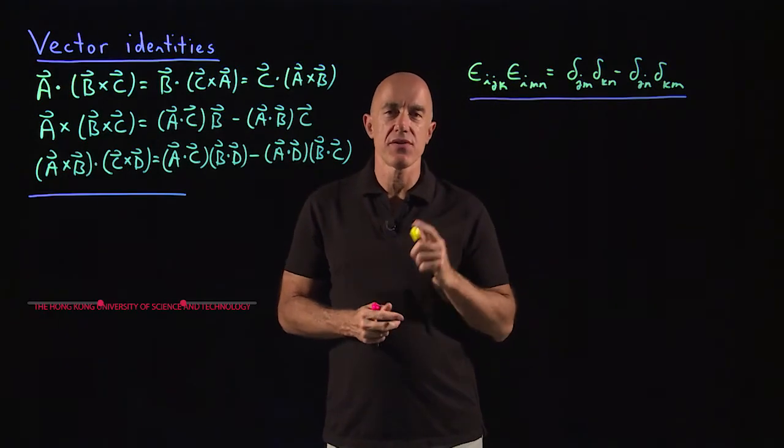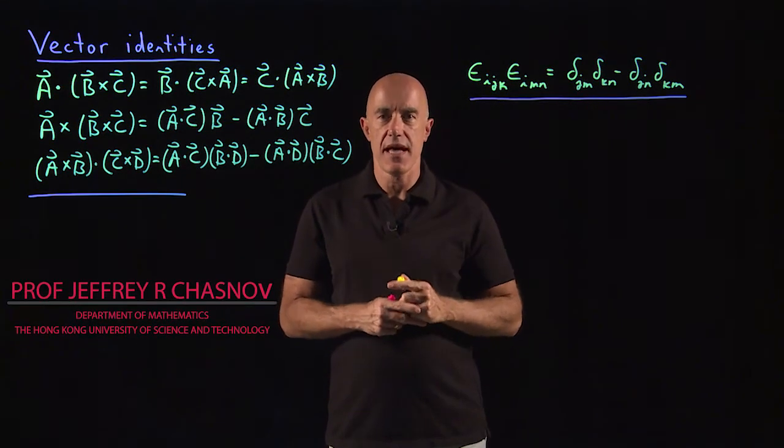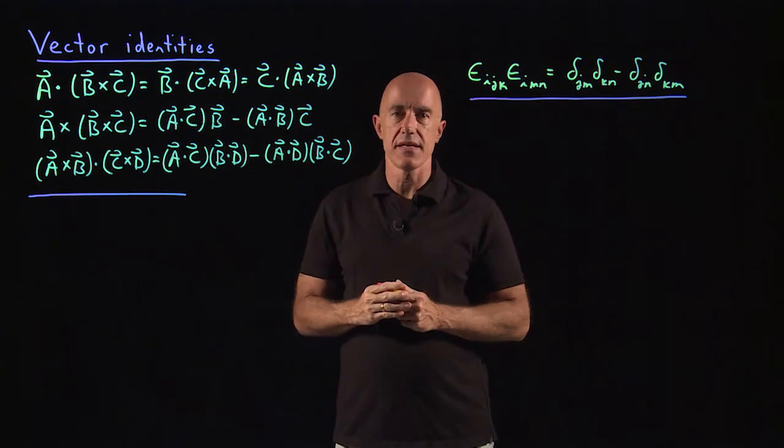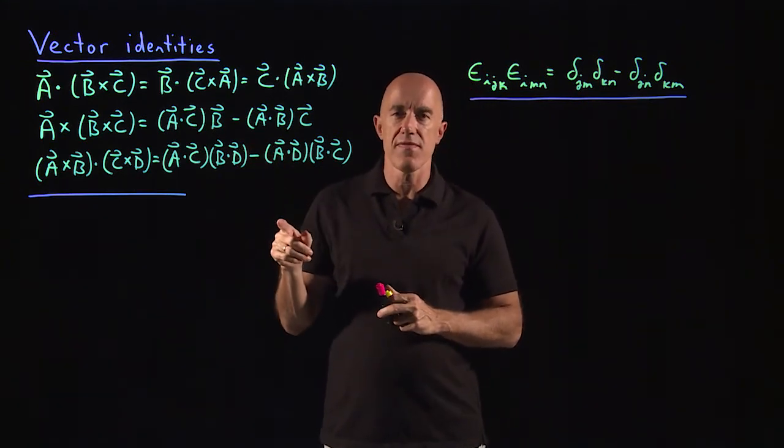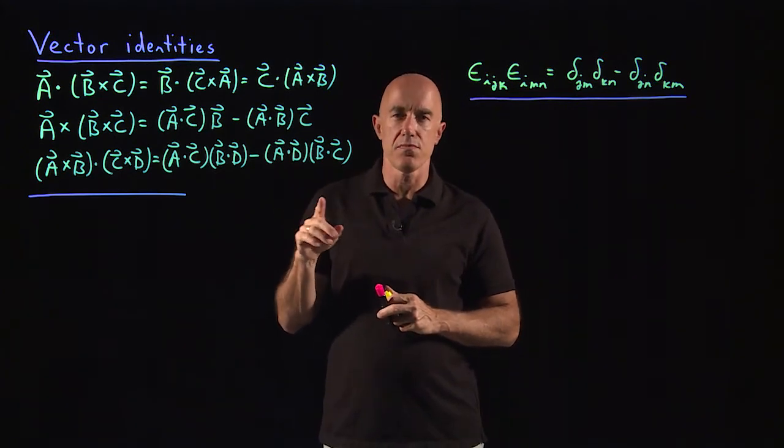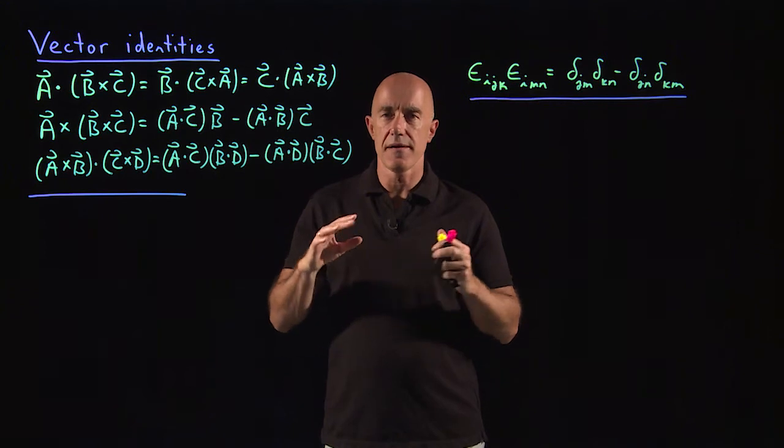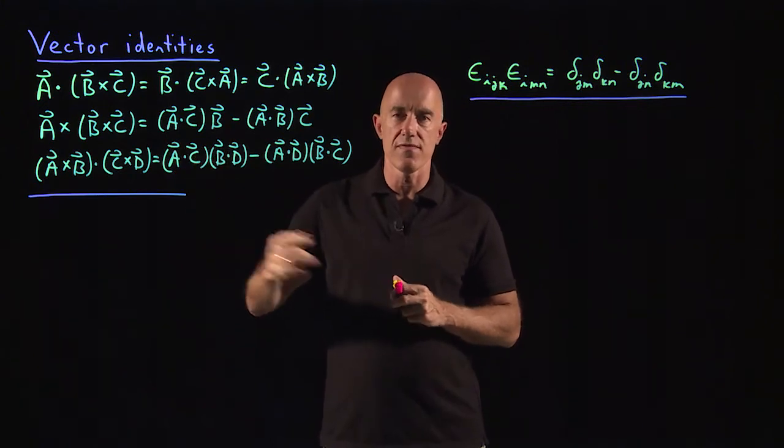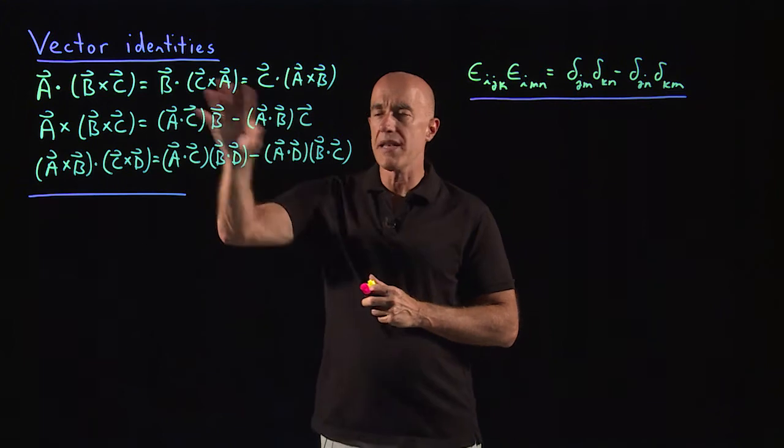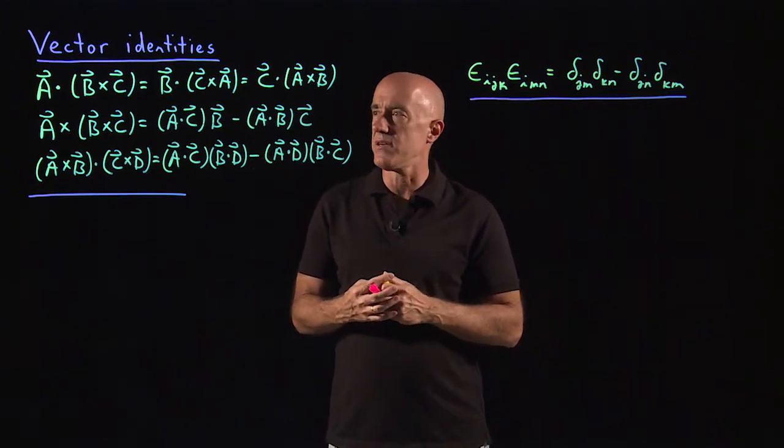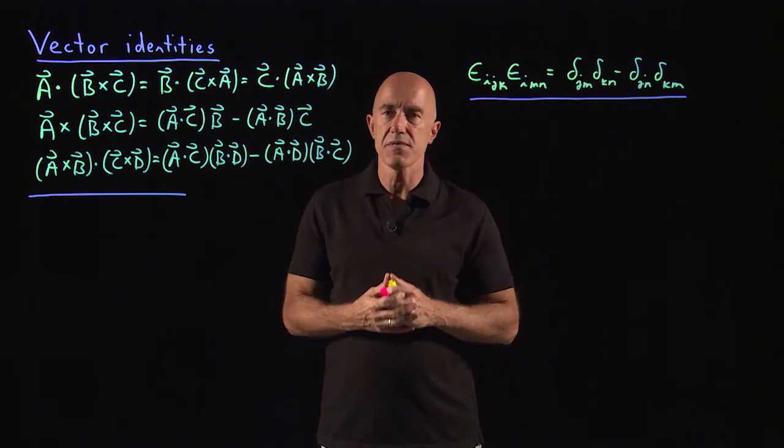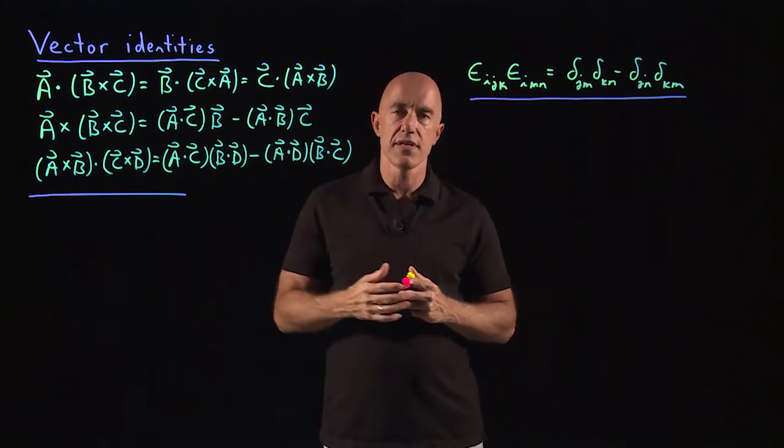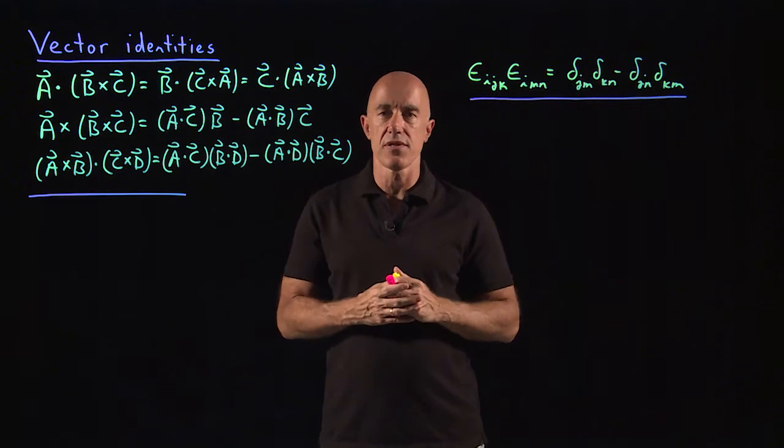So in this video, I want to make use of our Kronecker Delta and Levi-Civita tensor to prove some vector identities. These vector identities can be very useful when you're trying to manipulate vector equations. Sometimes you end up with something that can simplify dramatically if you apply one of these identities.